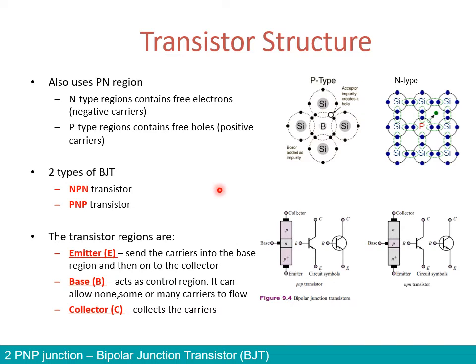How does this work for a transistor? A transistor, instead of having just two regions P and N like in a diode, will have three regions. And depending on how we arrange those P and N regions, we will have two types of transistors: one is what we call an NPN transistor, and the other is a PNP transistor.